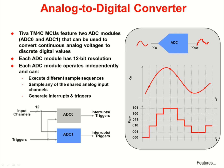Tiva C-Series microcontrollers feature two ADC modules, ADC0 and ADC1, that can be used to convert continuous analog voltages to discrete digital values. Each one of these modules has 12 bits of resolution, can operate independently, and can execute different sample sequences. You can sample any of the shared analog input channels, single-ended or differential, and you can generate interrupts and triggers.